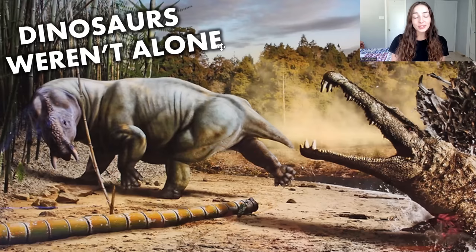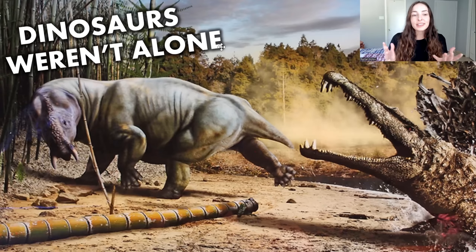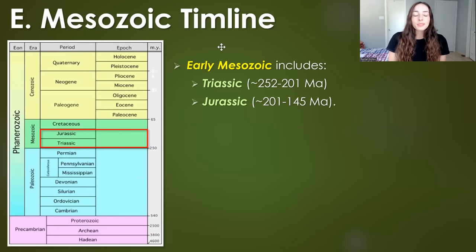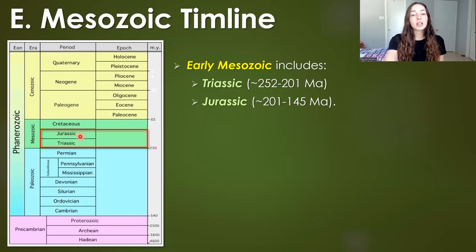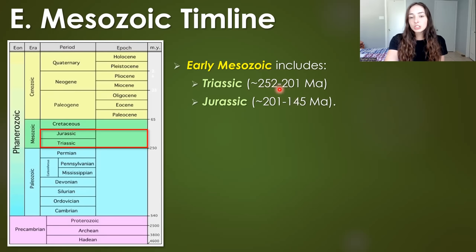Even though it may seem like dinosaurs were the only living things on land for the entire Mesozoic era, they were actually not alone. In this video I'm going to be talking about the other land animals that were around during the dinosaurs' reign. I'm going to be focusing on the Triassic and the Jurassic periods, which went from around 252 million years ago to around 145 million years ago combined.